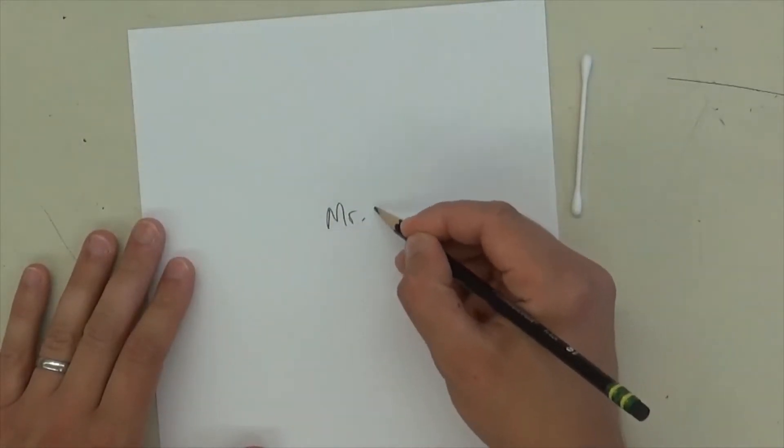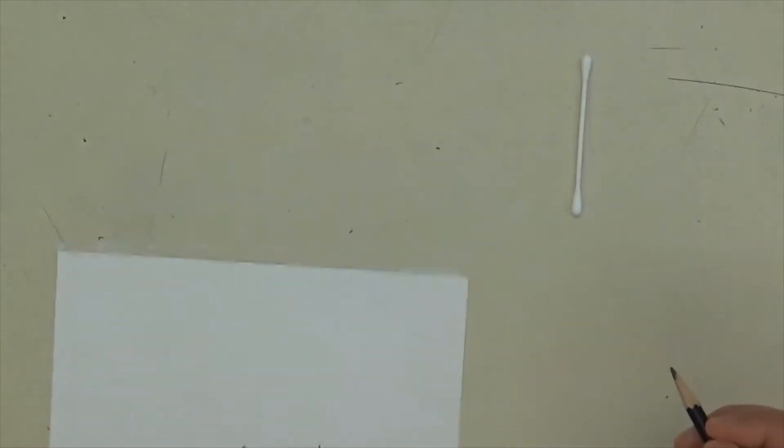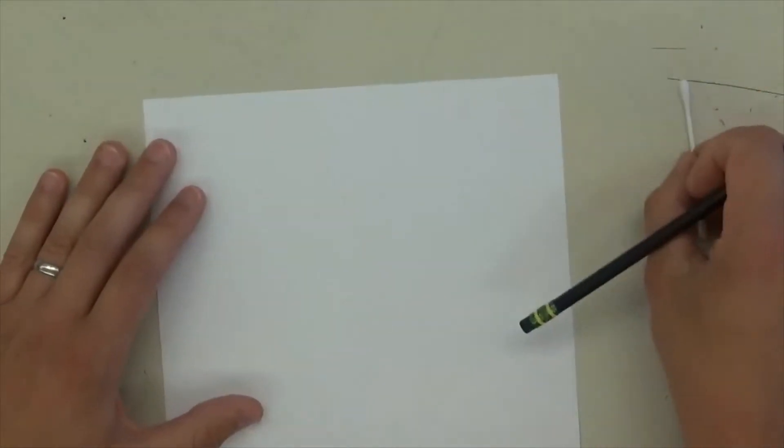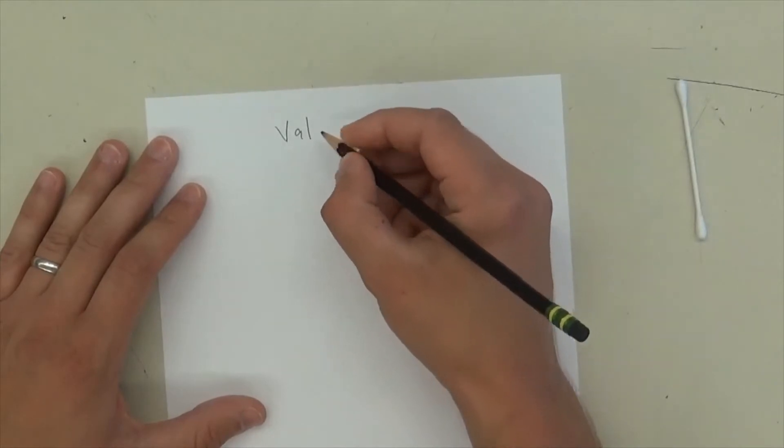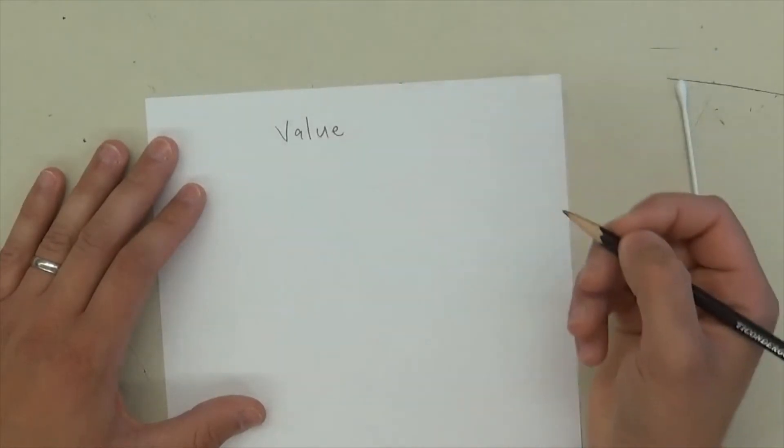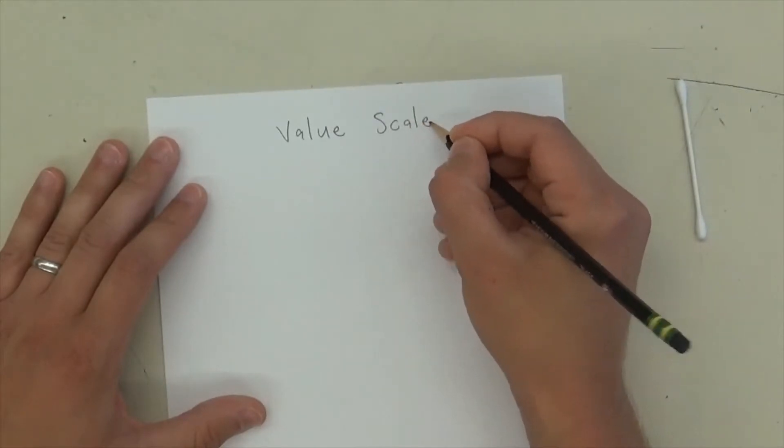I like to work the tall way, and you should always put your name on the back, and then whatever your class code is underneath. You can write value scales at the top, V-A-L-U-E S-C-A-L-E.